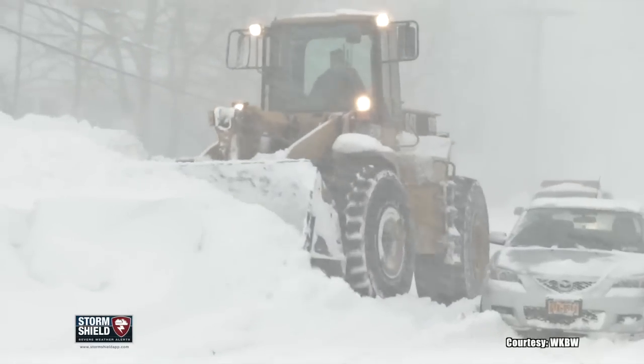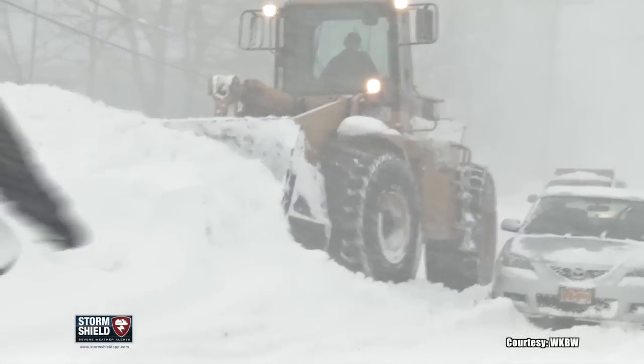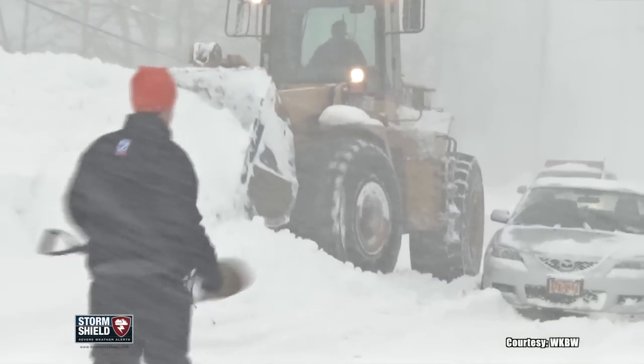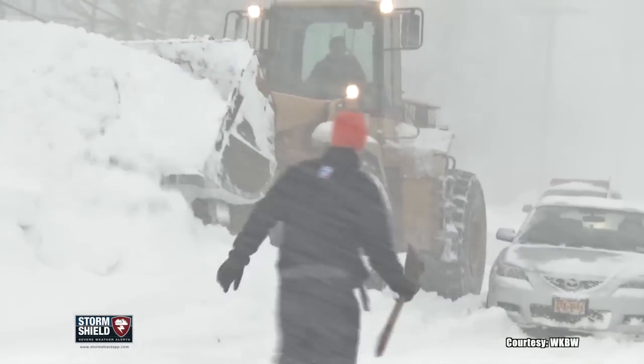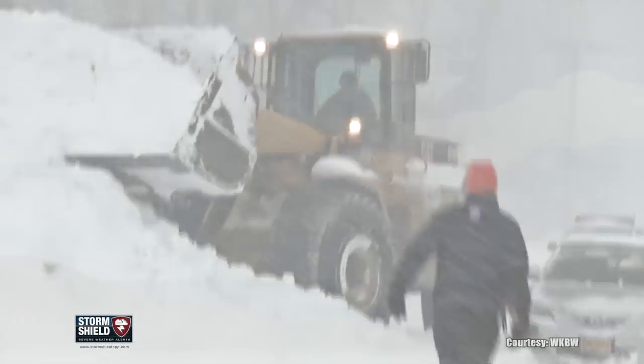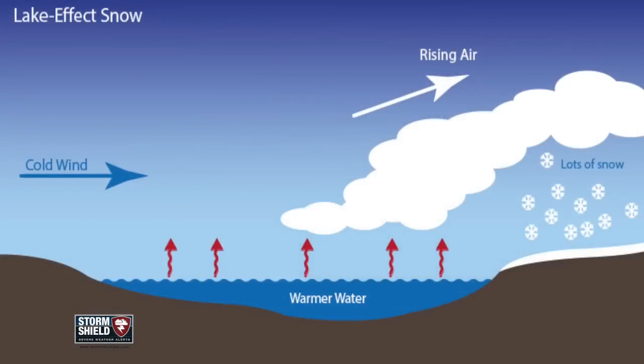Lake effect snow is most common in the fall — that's because the land cools down much faster than water. The warmer, moist air over the lake rises to form clouds.